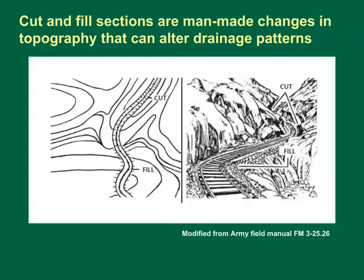A cut is a man-made feature that cuts through raised ground. A fill is a man-made feature that fills a low area. Cut and fill sections tend to occur together because engineers use earthworks balance methods to create a relatively level bed for a road, railroad track, or other man-made structures. The cut and fill sections may be defined using tick marks on the map that point to lower ground. Cut and fill sections commonly alter natural drainage patterns.